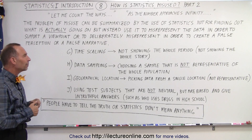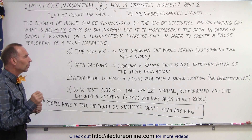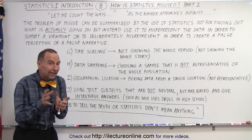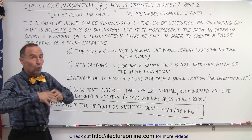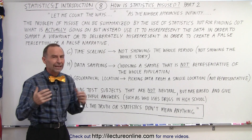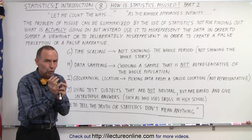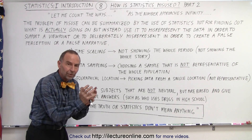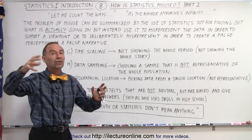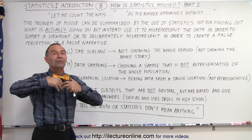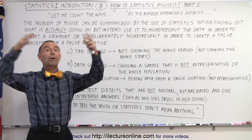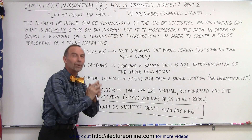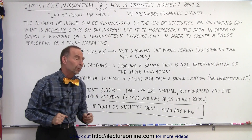Also, data sampling. What they will do is choose a sample that is not necessarily representative of the whole population. They choose a particular sample that does not represent the whole population and then infer that the whole population thinks the same way as that small, misrepresented sample.